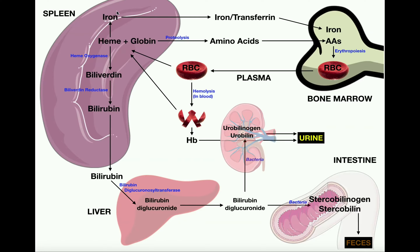That iron in the spleen macrophage has to first be removed from the heme, and that removal is done through an enzyme called heme oxygenase. Heme oxygenase is the first enzyme in heme degradation, and it's going to convert heme into biliverdin. This is done in the spleen macrophage.